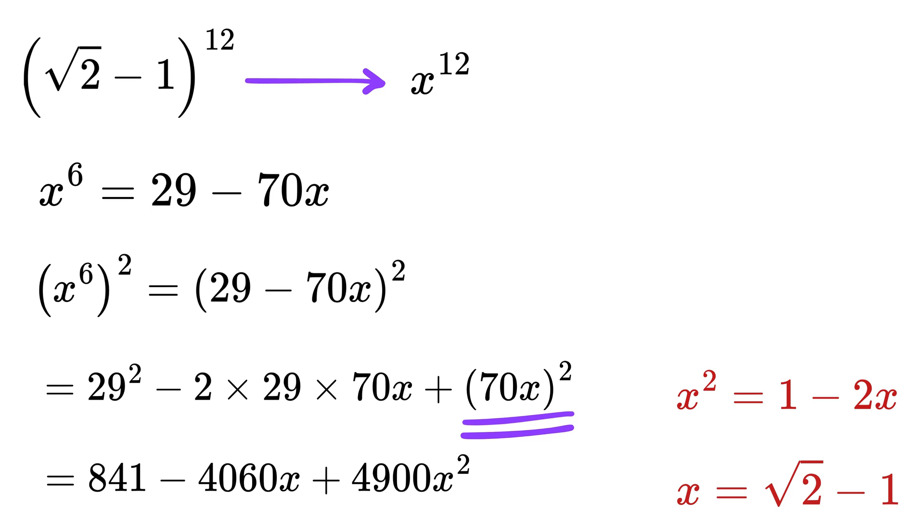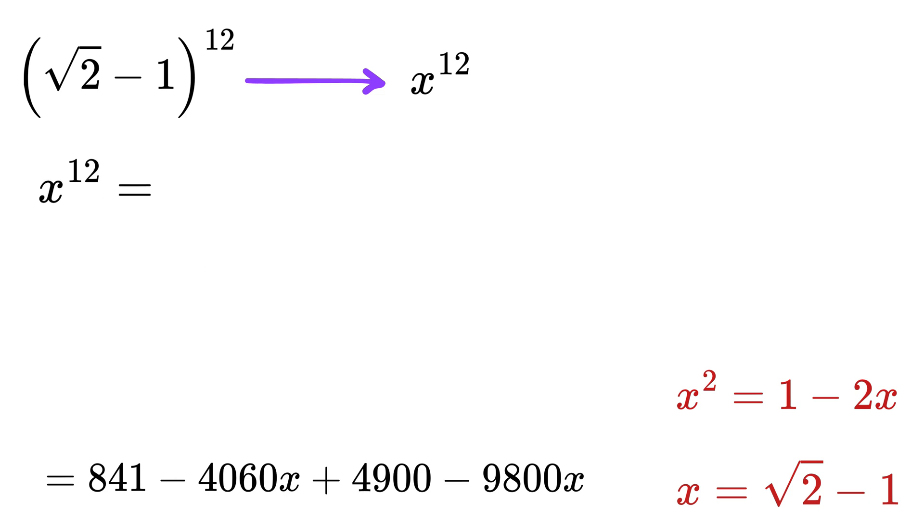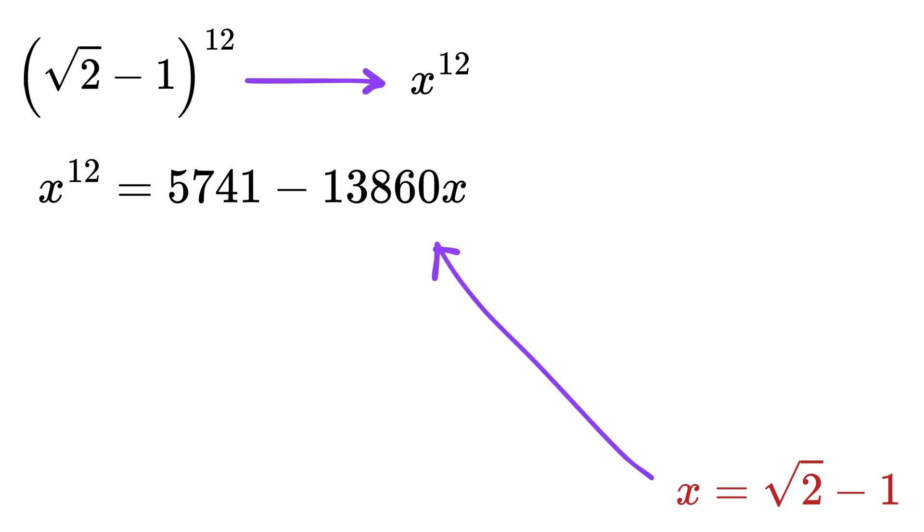Now you know the drill, substitute x^2. So x^12 = 5741 - 13860x.